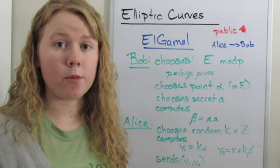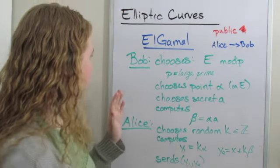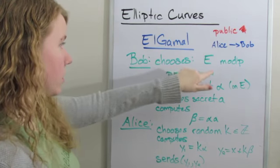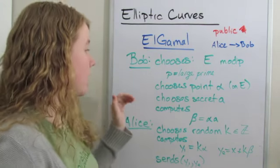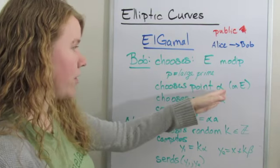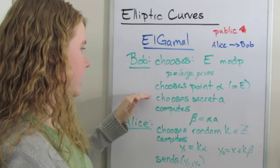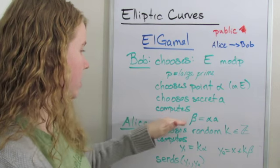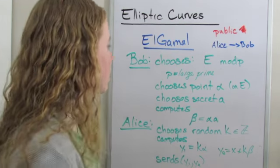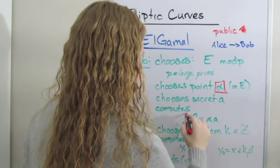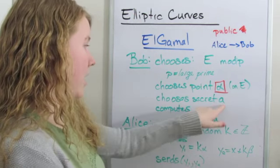But in this case I am going to be doing the elliptic curve system. So as usual, Alice is sending Bob a message. What Bob does is he chooses an elliptic curve E mod p, where p is a large prime. He also chooses point alpha, which is on the elliptic curve E, and then he chooses a secret a and computes beta, where beta equals alpha times a. Now the alpha and the beta are both public. The a is not.